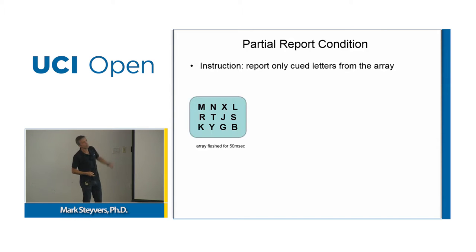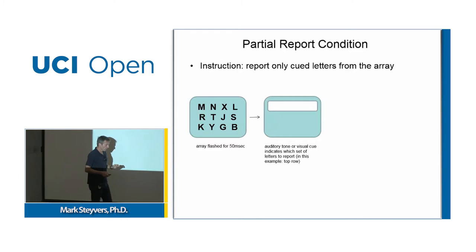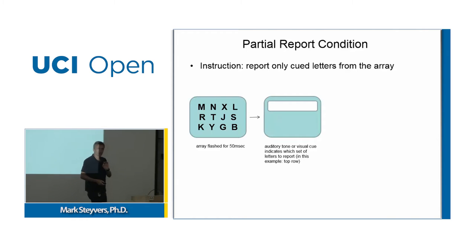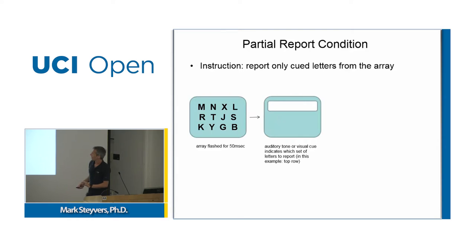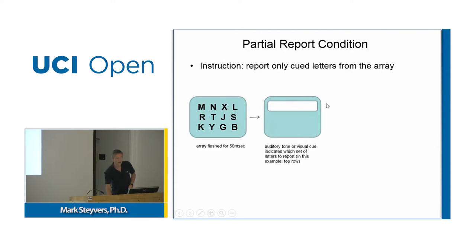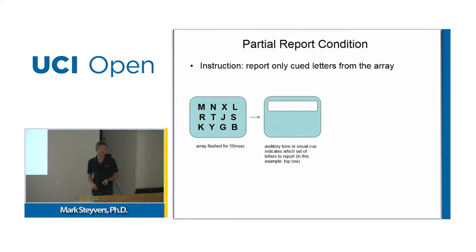So he tried a partial report condition, where you're cued to read out a specific row of the grid. The cue comes on after the display goes off, and you can never predict in advance which row you'll need to read. There could be a visual cue like an arrow — read the top, middle, or bottom row — or an auditory cue: a high tone for the top row, a low tone for the bottom row.